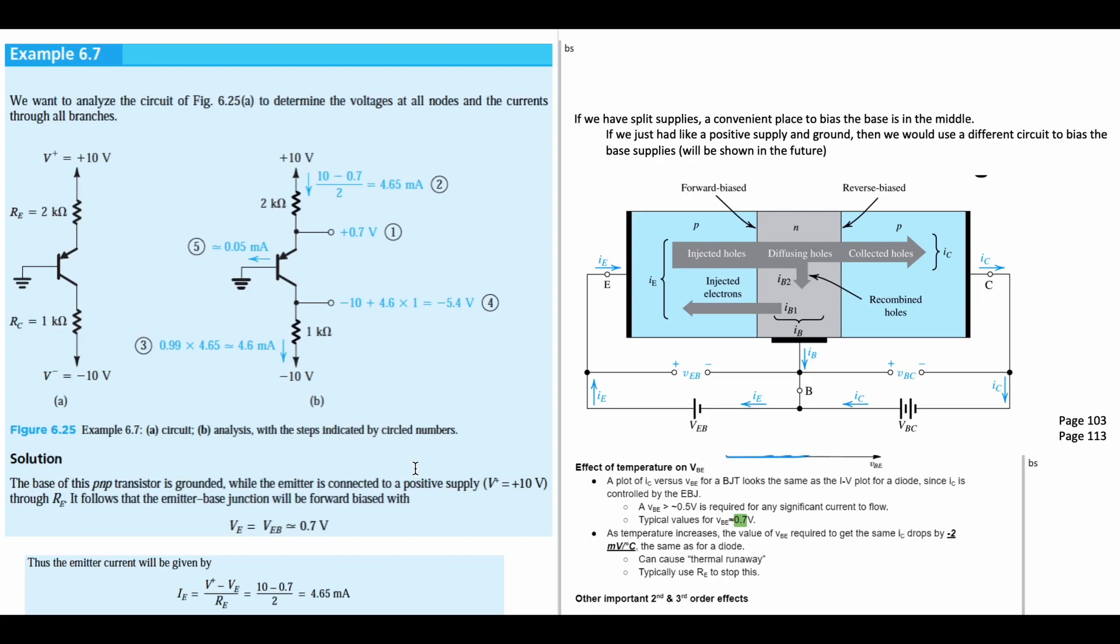We're going through another example, and we want to analyze the circuit of figure 6.25 which is given here, to determine the voltages of all nodes and the currents through the branches. This is similar to what we did previously, except now we're doing it on a different circuit.